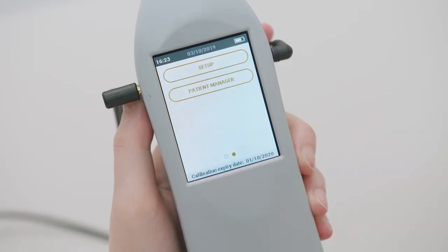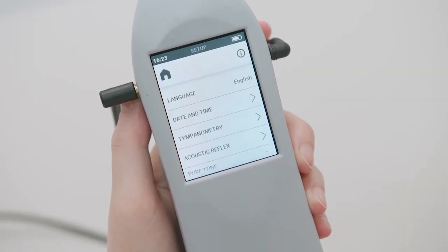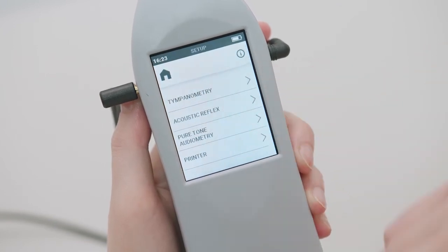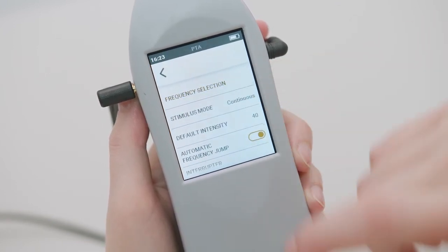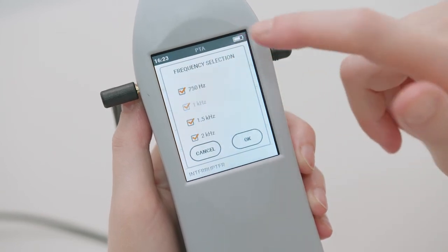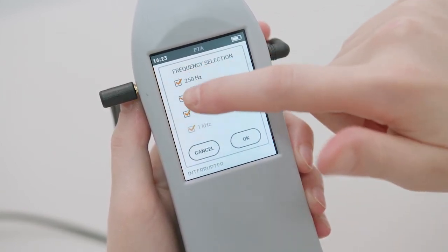The audiometric exam settings menu allows you to customize several parameters. Let's see what we can do here. It is possible to select the frequencies individually. Stimulus frequencies are available between 125 Hertz to 8 kilohertz.